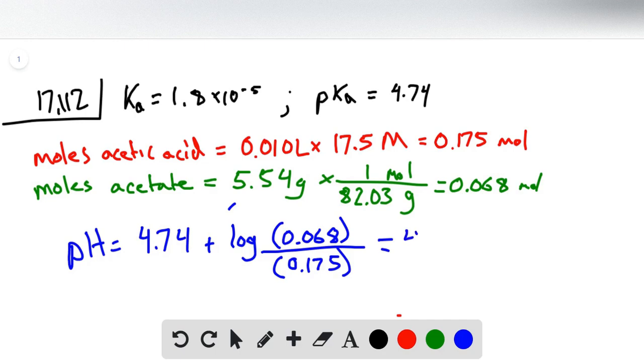So in this case we get 4.74 minus 0.41 which is equal to 4.33 as our pH.